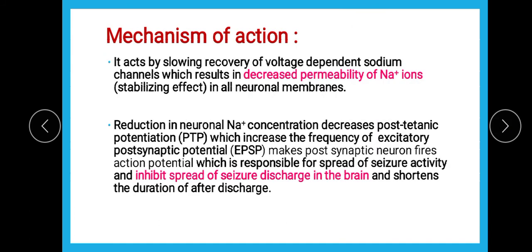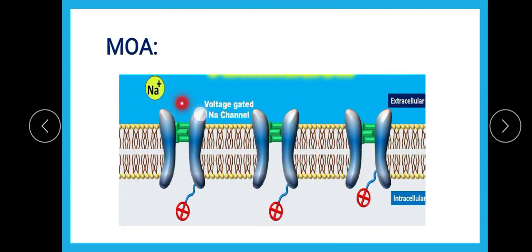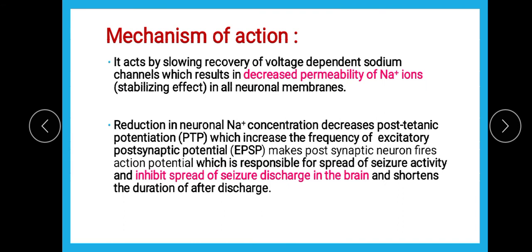Coming towards the mechanism of action — as you can see in the diagram, these are voltage-gated sodium channels and the red mark indicates inhibition. It is clear from the image that the drug acts on voltage-gated sodium channels. What actually happens is that the neuronal sodium concentration decreases, because the voltage-dependent sodium channel permeability to sodium ions decreases in the neuronal membrane, which produces a stabilizing effect.